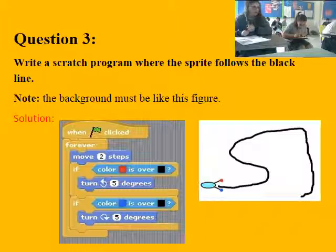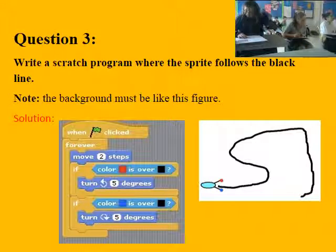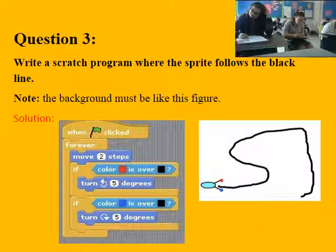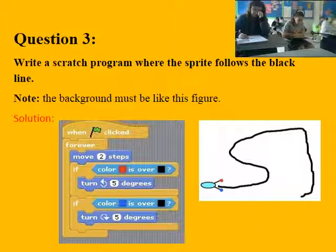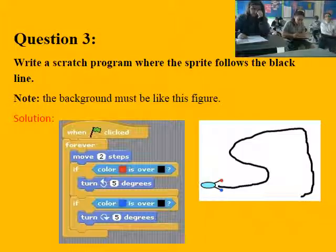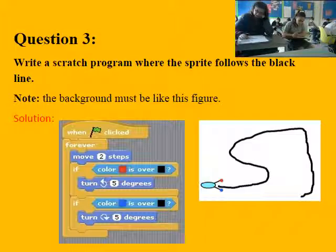Question number three: write a Scratch program where the sprite follows the black line. Note the background must be like this figure. Read the blocks. When flag clicked, if color is over black, move to the left. If color blue is over black, to the right. Okay, very good. So the sprite will follow the black line.